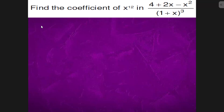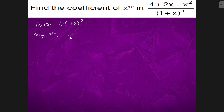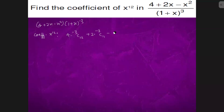The above term can be written as (4 + 2x - x²) into (1 + x) to the power minus 3. So the coefficient of x to the power 12 is: 4 into (-3C12), plus 2 into (-3C11), minus the x² term giving minus 3C10.